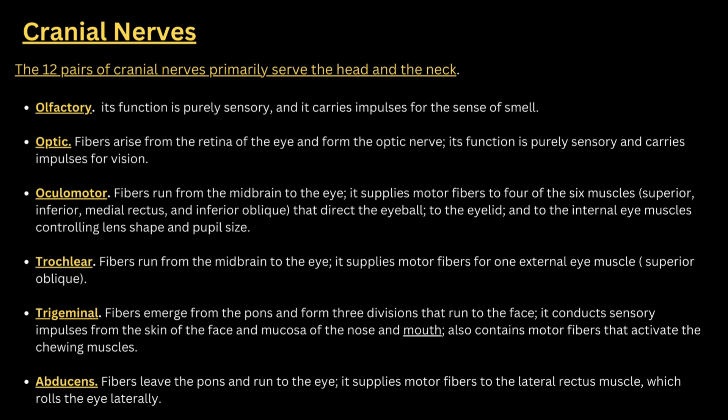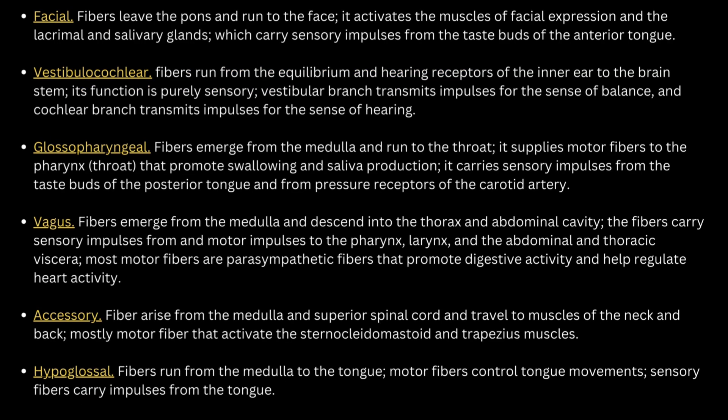There are 12 pairs of cranial nerves that serve the head and neck. The first one is olfactory, the second is optic, the third is oculomotor, the fourth is trochlear, the fifth is trigeminal, and the sixth is abducens. Definitions for all these nerves are provided in the notes. The seventh is the facial nerve, the eighth is the vestibulocochlear nerve, the ninth is the glossopharyngeal nerve, the tenth is the vagus nerve, the eleventh is the accessory nerve, and the twelfth is the hypoglossal nerve.